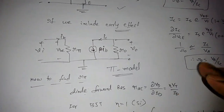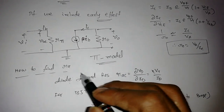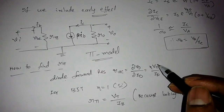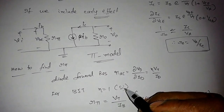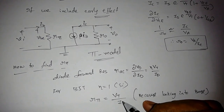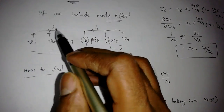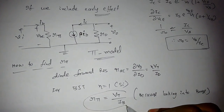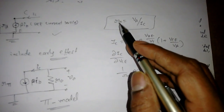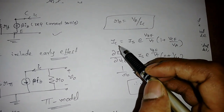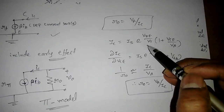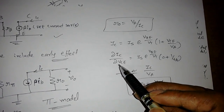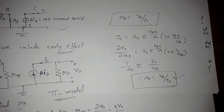To find r-pi: the AC dynamic resistance equals delta VD / delta ID, which is approximately VT / ID for large currents with eta equal to 1 for silicon. Since the input current is IB, r-pi equals VT divided by IB. To find r0: when we include the Early effect, IC equals IS times e^(VB/VT) times (1 + VC/VA). Differentiating with respect to VC gives r0 equals VA divided by IC.